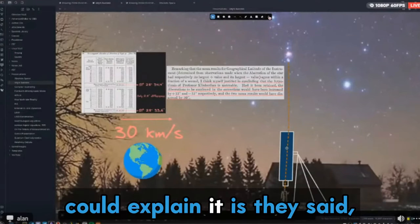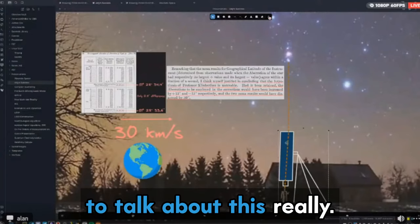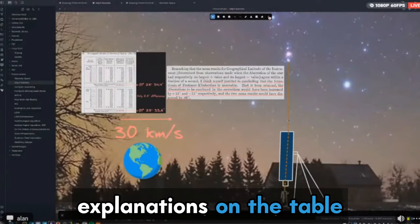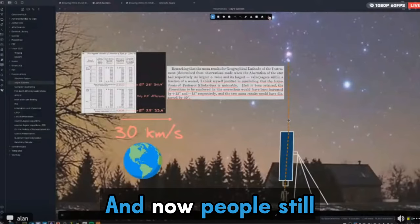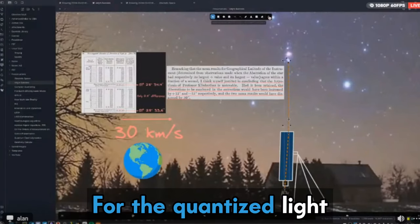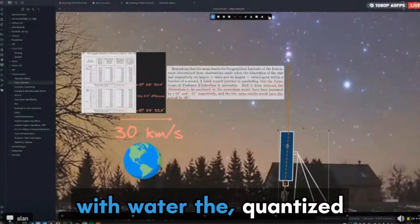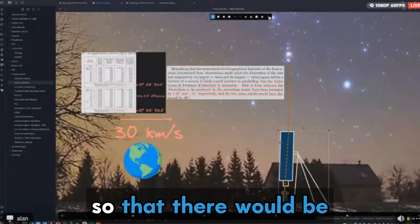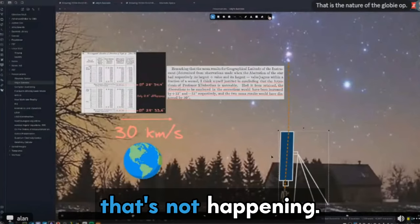And the only way that they could explain it is they said, okay, we're just never going to talk about this really. Because the only explanations on the table were at the time, right, they thought light may be a particle. And now people still think that, right? They're like, oh, the old quantized light. For the quantized light lads, when light enters this telescope and it's filled with water, the quantized particles would have to gain acceleration somehow so that there would be no correction required. So we all know that's not happening.